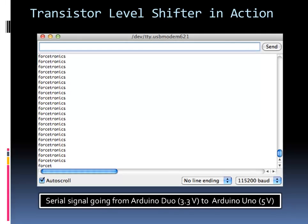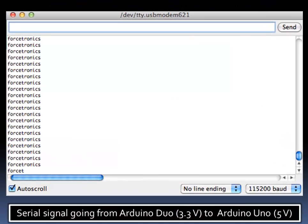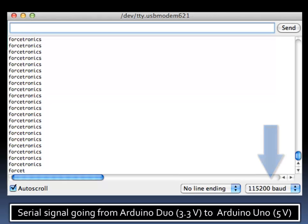This is to show the previous circuit, the transistor level shifter in action. This is my serial monitor from the Arduino Uno. The Arduino Due is sending over a serial signal that says ForceTronics with a newline character, and the Uno is reading it correctly. Please note that I'm actually using a pretty fast baud rate, 115,200 baud.